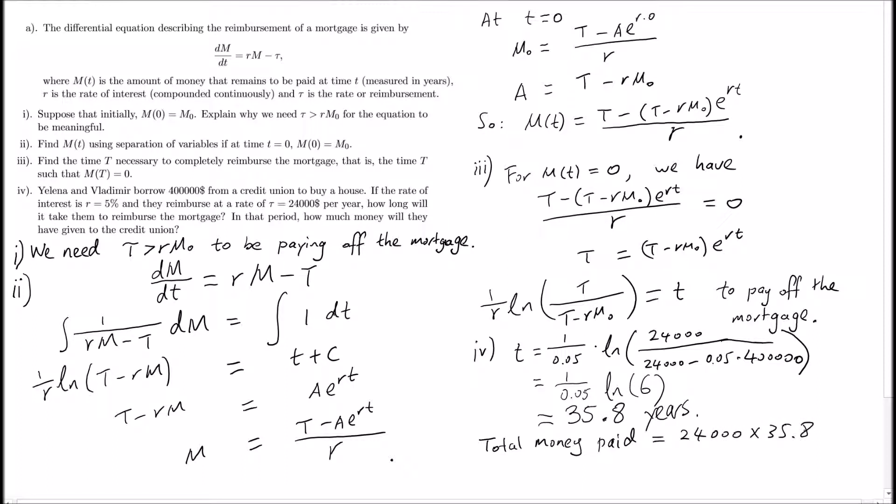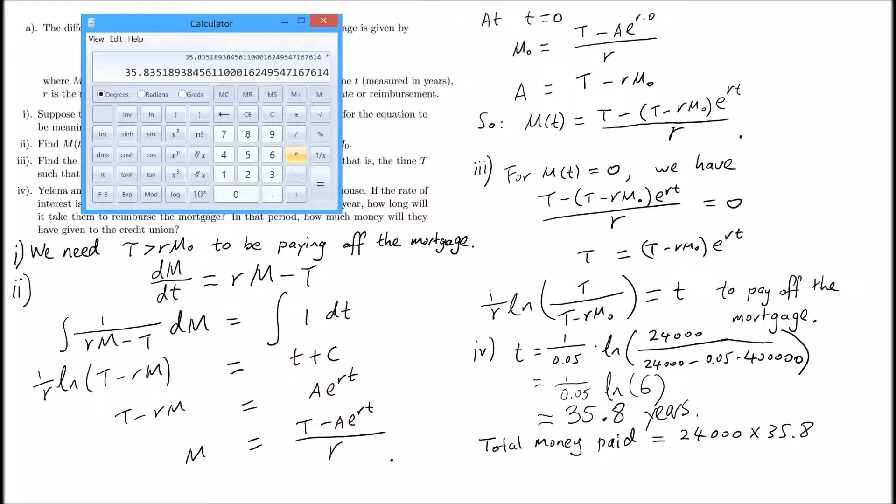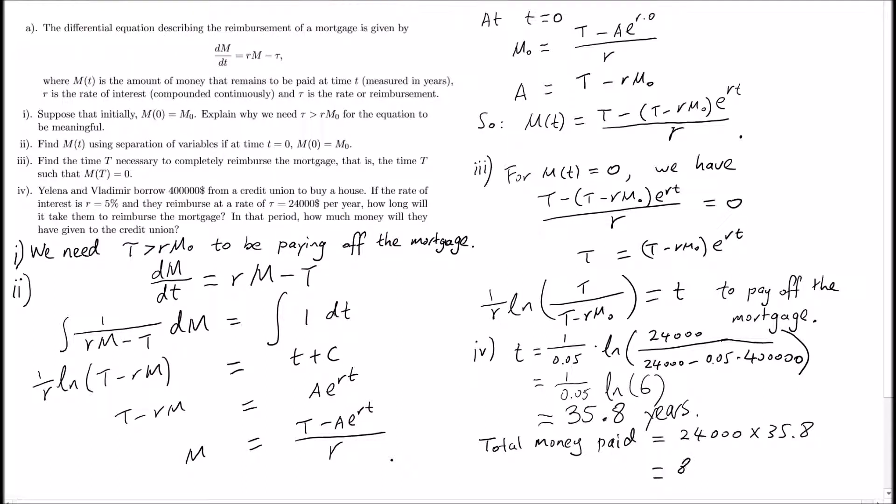Going back to our calculator, we multiply the year number by 24,000, which gives us $860,044. And that's all. Thank you for watching and remember to subscribe.